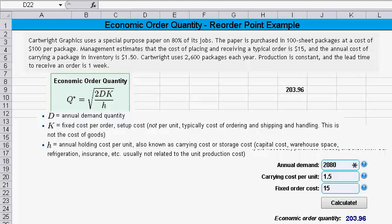Now what they want us to determine is the economic order quantity. Well there's the formula right there. Economic order quantity Q* equals the square root of 2DK over H. What do those variables mean? D is the annual demand quantity, K is the fixed cost per order, and H is the annual holding cost per unit, which some people call the carrying cost.